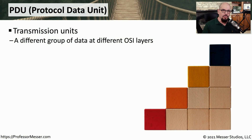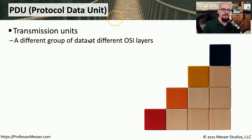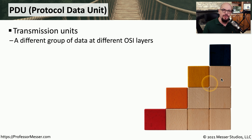Getting data moved from one part of the network to the other relies on something called a PDU, or a protocol data unit. Sometimes you'll hear these referred to as transmission units, because we're taking a little bit of data and transferring it across the network as a single unit.